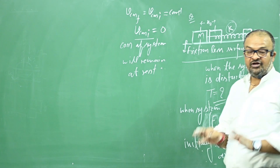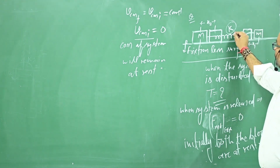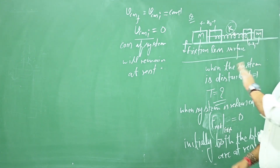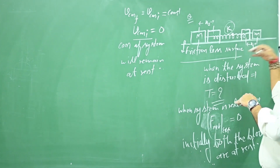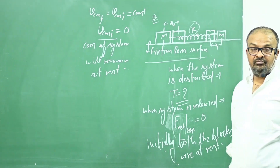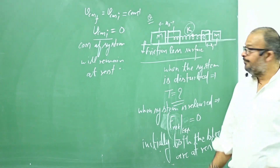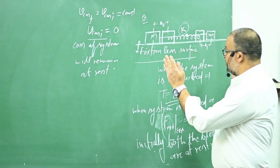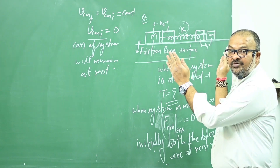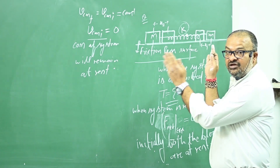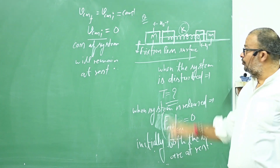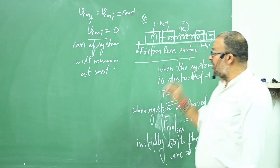The center of mass of the system will remain at rest. Suppose the center of mass is here — one block had one expansion and one block had one compression, so the net compression is x1 plus x2.